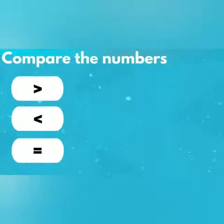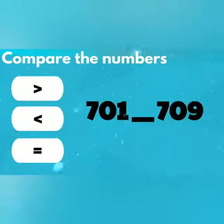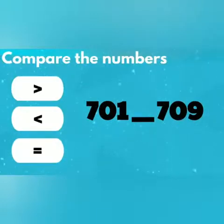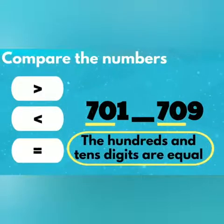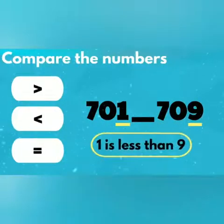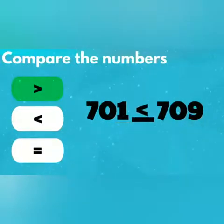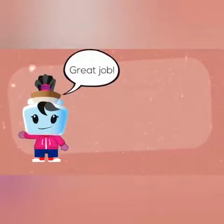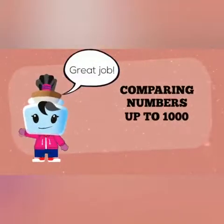Number 5: 701 and 709. The digits are equal in both the hundreds and tens place, so we look at the ones place. 1 is less than 9, so the answer is less than. Great job! I hope that helped make comparing numbers up to 1000 a lot easier. Until next time!